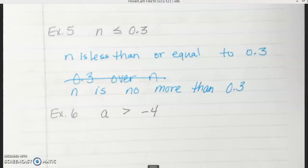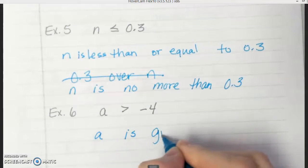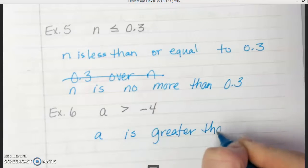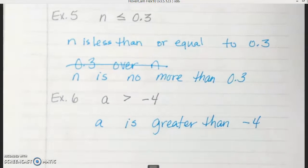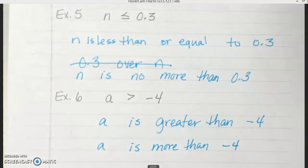Okay, let's go to example 6. So this time, if you were looking at this inequality, how would you read that? Typically, we say A is greater than negative 4. That's typically how we would say that, right? You might also hear A is more than negative 4. Those, that's usually the terms you're going to hear the most. So either A is greater than negative 4 or A is more than negative 4. Any questions on those?